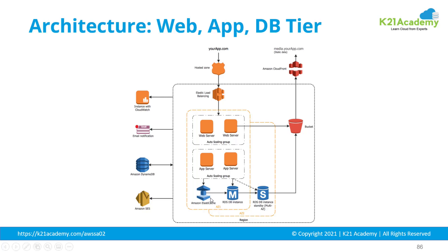For disaster recovery, I've configured a standby of the relational database in another availability zone. I've configured the app server so that if the primary RDS backend database is not available, requests are forwarded to the standby database, which can be brought online if required. For backup purposes, I can store backups of my web server, app server, and relational data into an S3 bucket — Simple Storage Service. I can also store static data like images and GIFs in a bucket, serving it through CloudFront, which is a content delivery network.